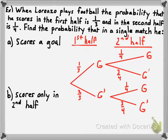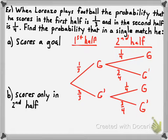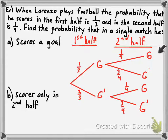The sample space has four outcomes: scores both halves, scores first half only, scores second half only, or scores in neither half. To find the probability of each outcome, you multiply all the probabilities along the branch. For example, the probability he scores in both halves is 1/3 times 1/4, which is one-twelfth.